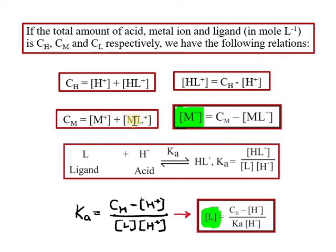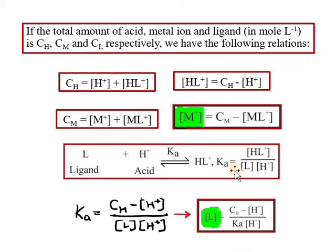With these concentration values, we can calculate CM and the ML+ complex concentration. Consider the competing reaction: H plus ion competes with metal ion for ligand L. When H+ reacts with L, we get the constant KA equals concentration of HL+ upon concentration of L times concentration of H+. This gives us our key relationship.